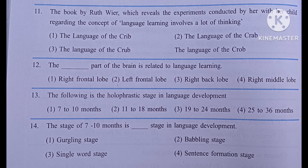The book by Ruth Weir, which reveals experiments conducted by her with her child regarding the concept of language learning: number one, The Language of the Crib; number two, The Language of the Crab; number three, The Language of the Crab; number four, The Language of the Crab. The answer is The Language of the Crib.